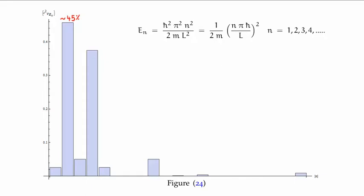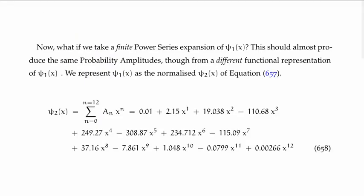Now we're in a strong position to discuss a more general example. What if I took a finite power series expansion of psi sub one of x in the form a times x to the n? This should produce almost the same probability amplitudes — almost, because I'm taking a finite power series. This representation of psi sub one would be a completely different function — not a linear combination of sine basis states, but looking completely different. So if we're able to calculate the same probability amplitudes, it shows that Fourier's trick definitely works. We used Mathematica to calculate the functional form of what I'm calling psi sub two, which is the x-to-the-n power series representation of psi sub one, as given in the centre of your screen.